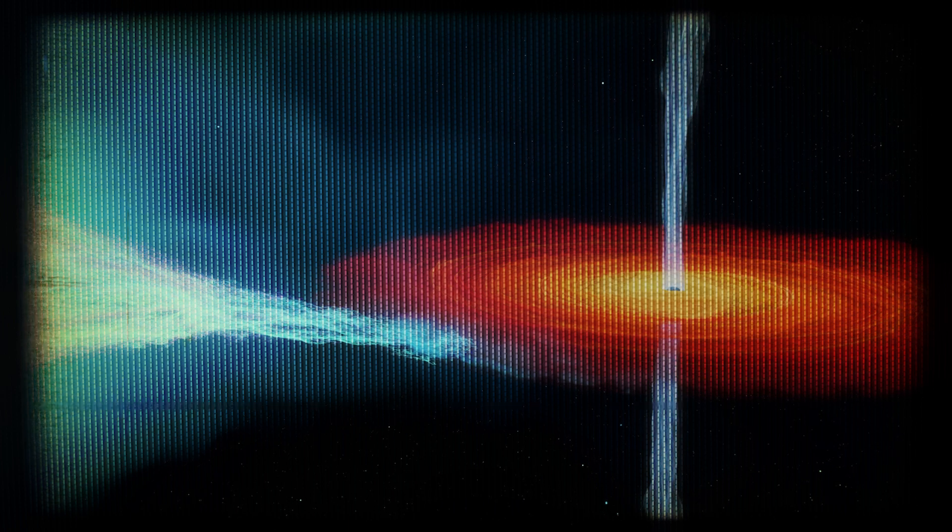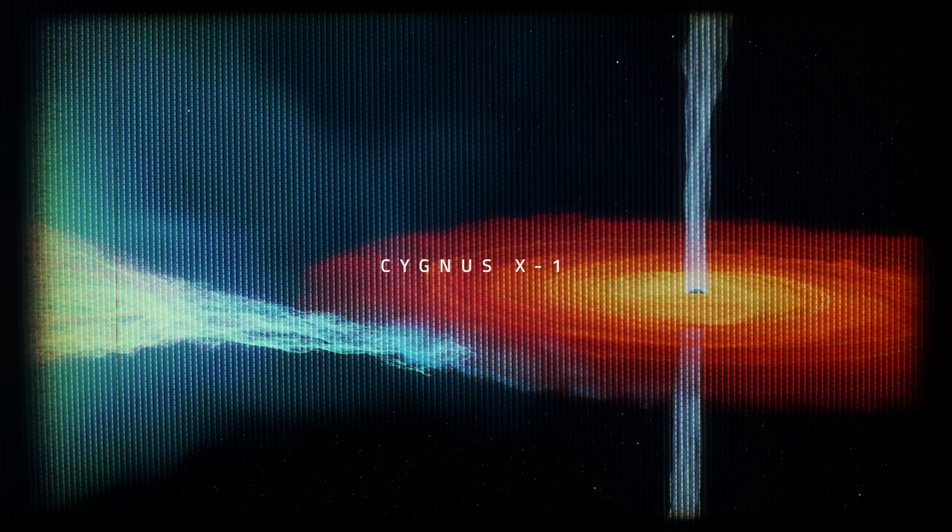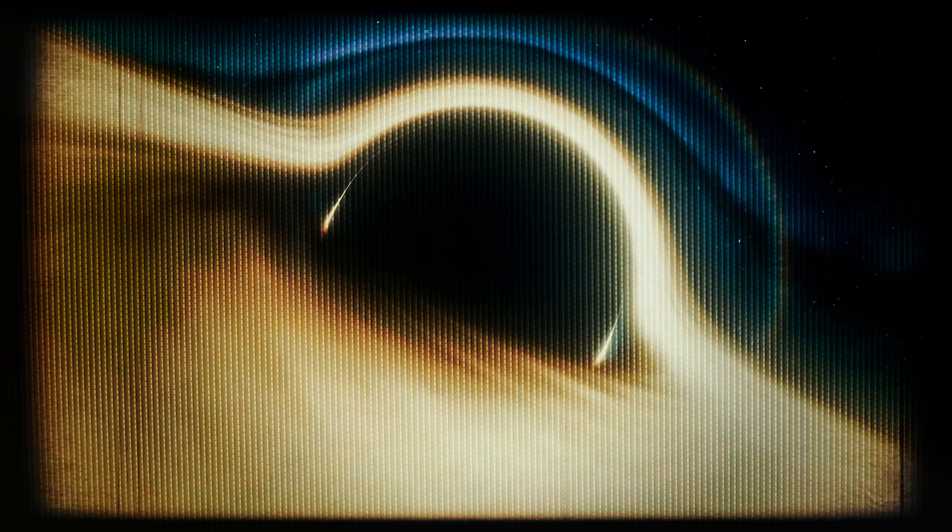The first confirmed black hole to be found was Cygnus X-1, the brightest X-ray source in the Cygnus constellation. Since then, we've managed to find about 50 black holes in systems where a normal star orbits a black hole.